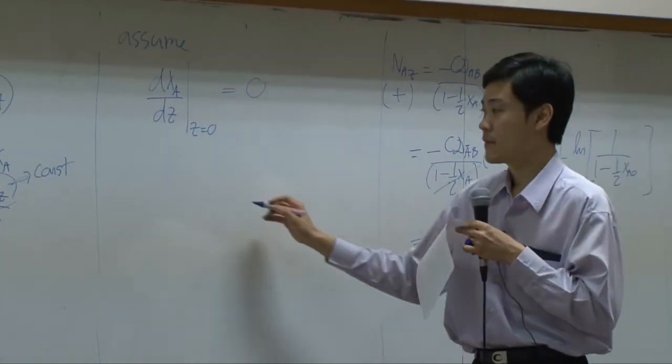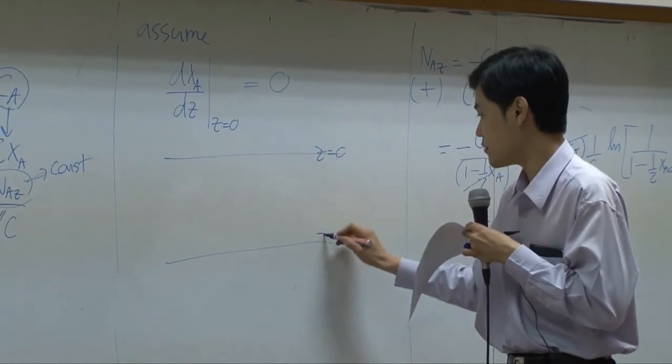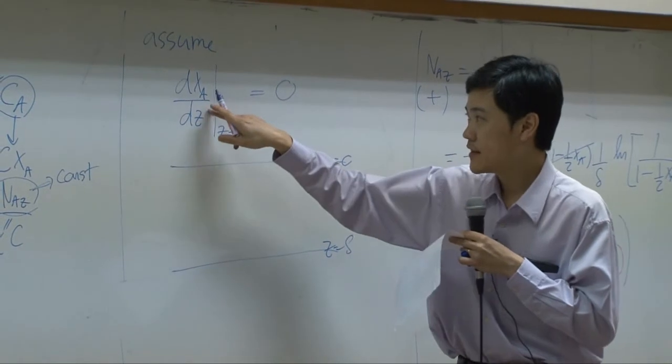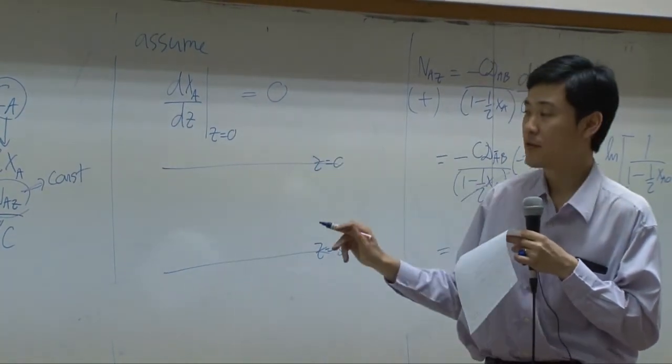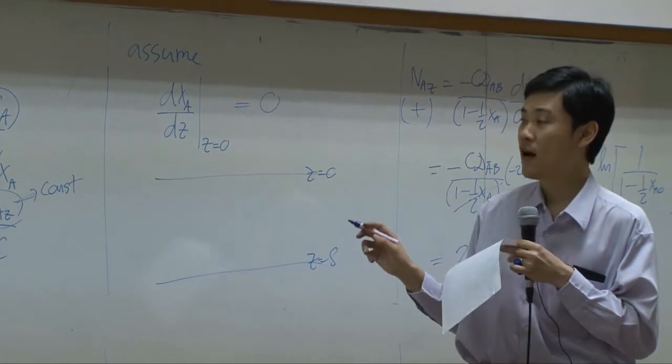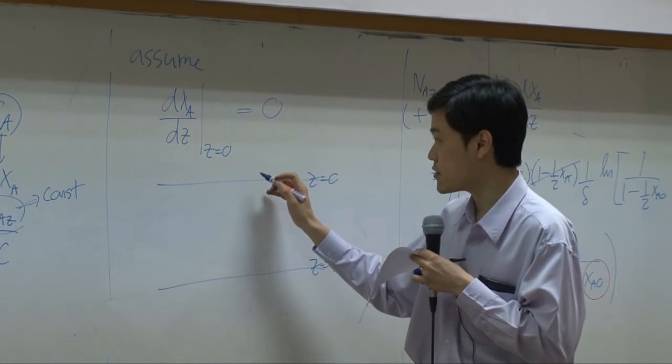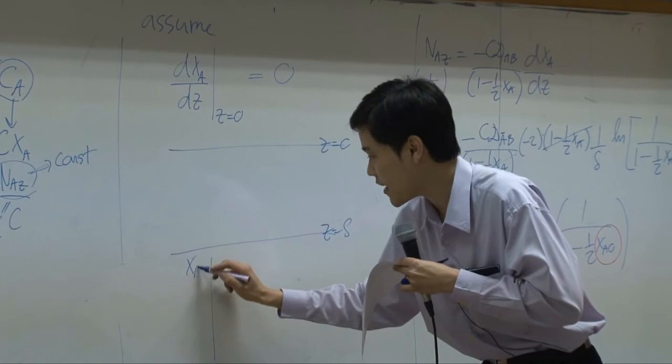Why? When you plot between z equals zero and z equals delta, this variable is the slope of the concentration profile. So if you plot concentration profile, let's say if you plot between xa and z, as z equals zero here...